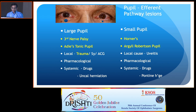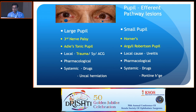Coming to the large pupil: if there is anisocoria, you are thinking of an efferent pathway lesion. The abnormal pupil may be the large one or the small one. A large pupil points toward third nerve palsy, Adie's tonic pupil, or trauma. A small pupil is typically Horner syndrome. The Argyll Robertson pupil can be large or small. Uveitis causing posterior synechiae is another consideration, and ophthalmologists are well placed with the slit lamp to identify these.